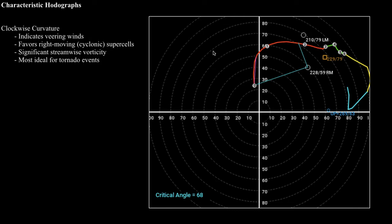If you're looking for an environment conducive to a tornado outbreak, ideally you want to see a hodograph that looks something like this — very strong curvature especially in the lowest one kilometer. You want to see wind direction changing very rapidly as you go up in the atmosphere, and you also want to see very strong winds throughout much of the troposphere. Clockwise curvature in the hodograph is most ideal for tornado events.